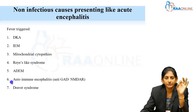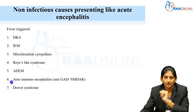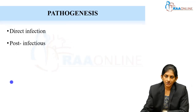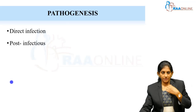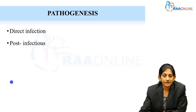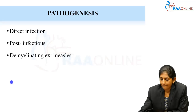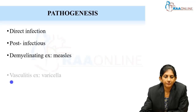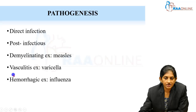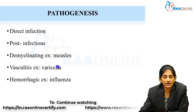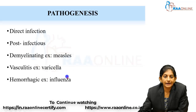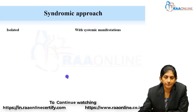If you are sure that the child has headache, fever, and any signs of inflammation, you can label it as acute encephalitis. The infections — viral or bacterial — can either directly be neurotropic and directly infect, or it can be a post-infectious or demyelinating illness. Some viruses like measles can trigger a demyelinating illness. Varicella can cause a vasculitis which can cause encephalitis. Influenza can cause a hemorrhagic pathology.